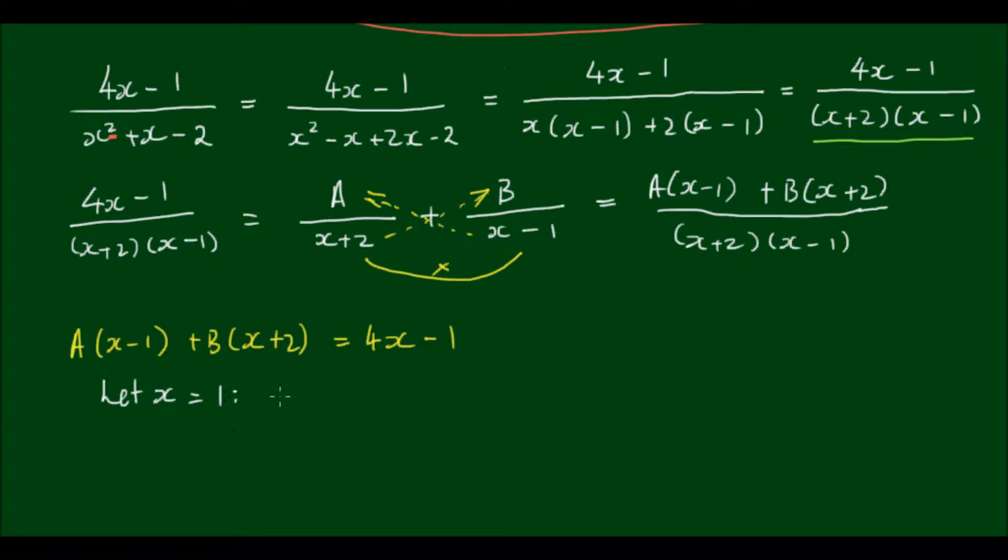So that means I get A times (1-1) plus B times (1+2) is equal to 4 times 1 minus 1, which is 3.